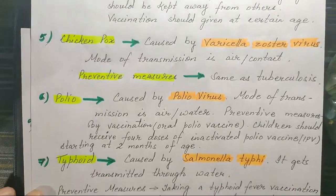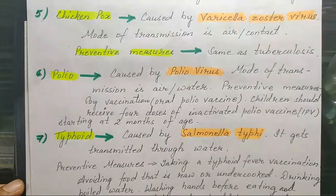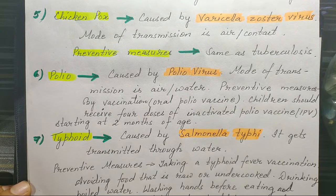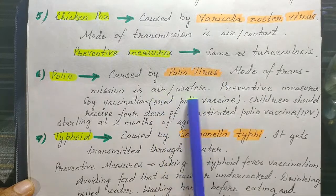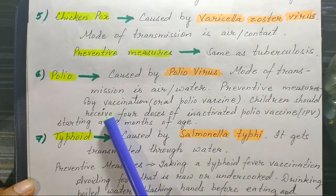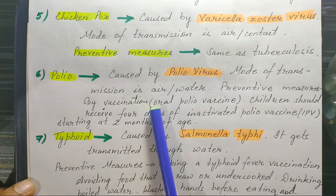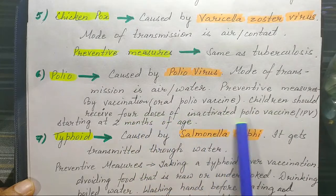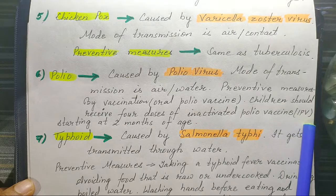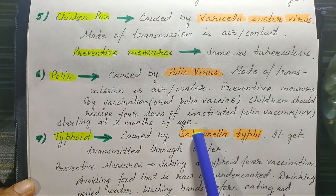Polio is caused by the polio virus. You might have heard about polio drops — the oral polio vaccine (OPV). The mode of transmission is air and water. For prevention, children should receive 4 doses of inactivated polio vaccine (IPV) starting at 2 months of age till 5 years.